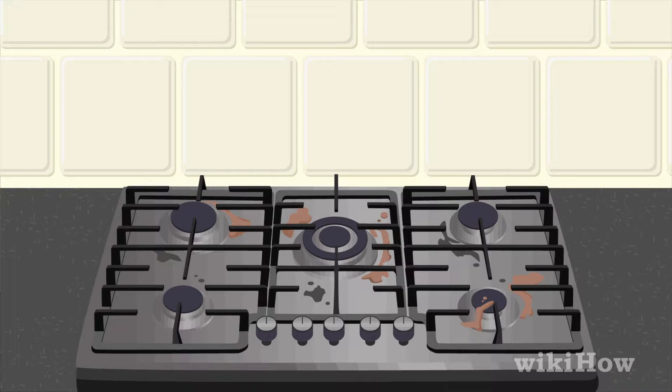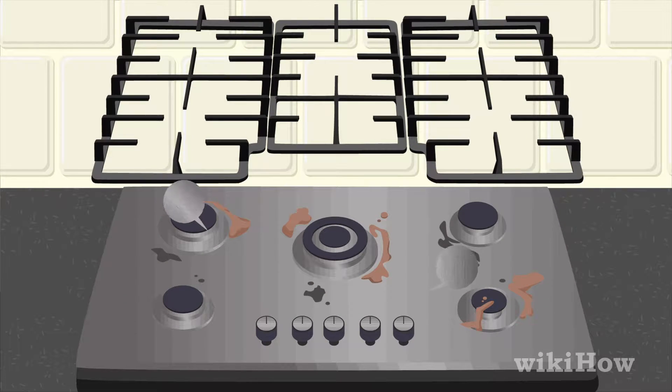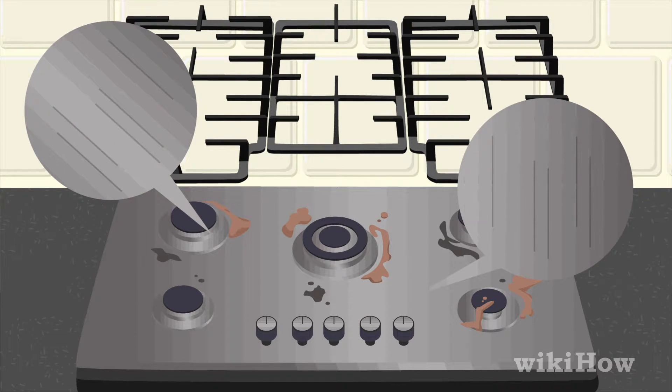To clean a stainless steel stove, first examine your stove to determine the direction of the metal grain. Look for subtle streaks or lines in the metal that go all in the same direction.